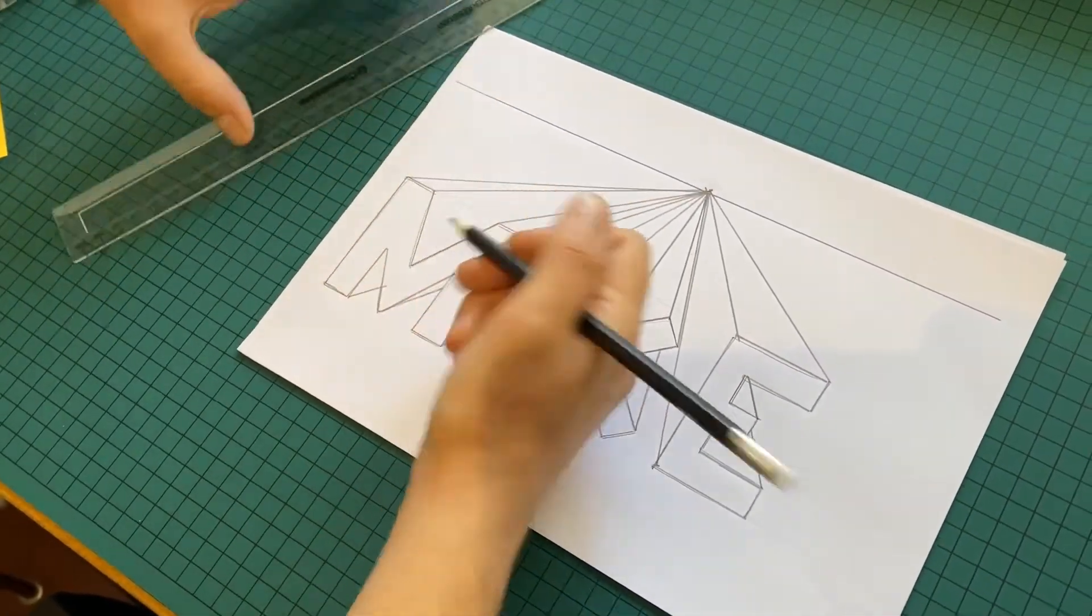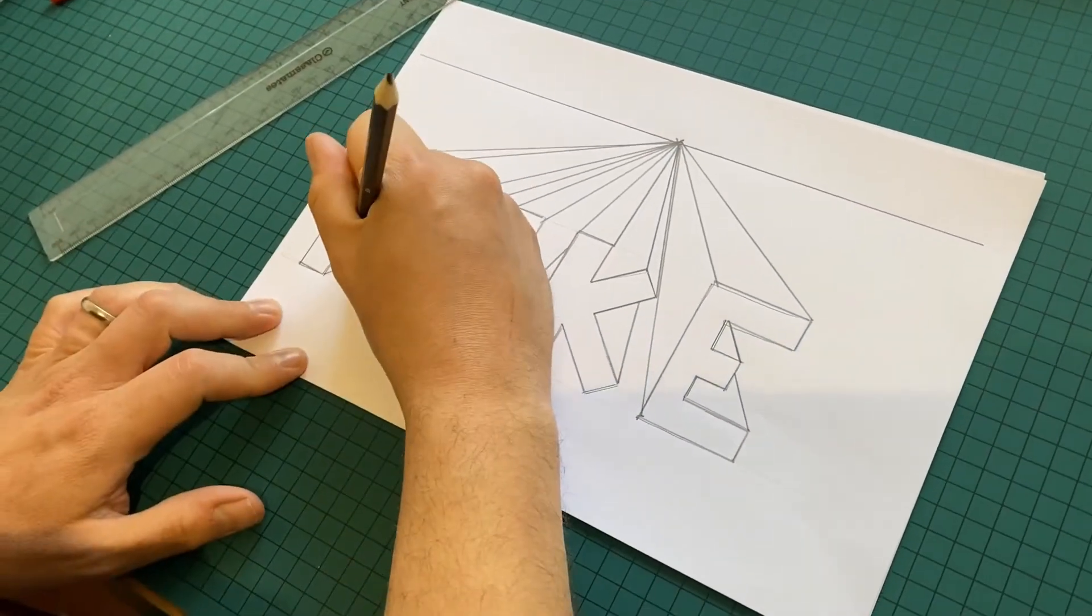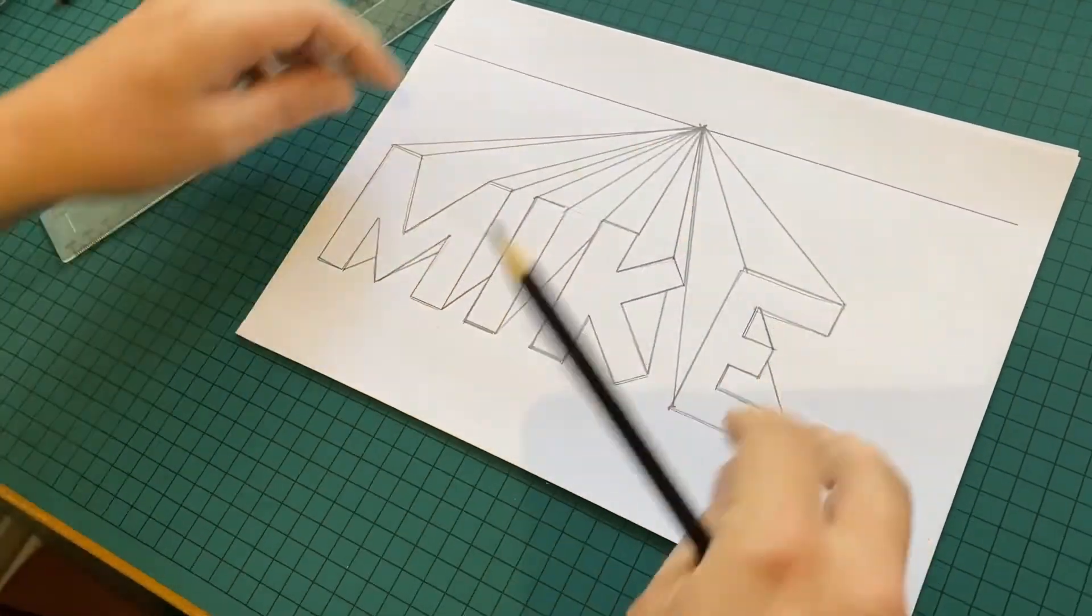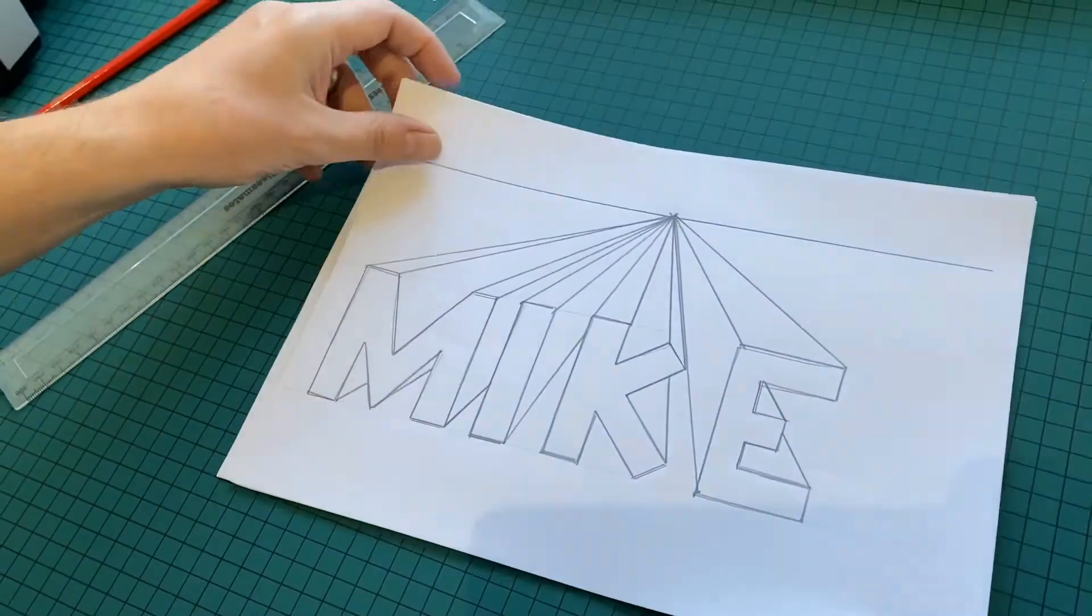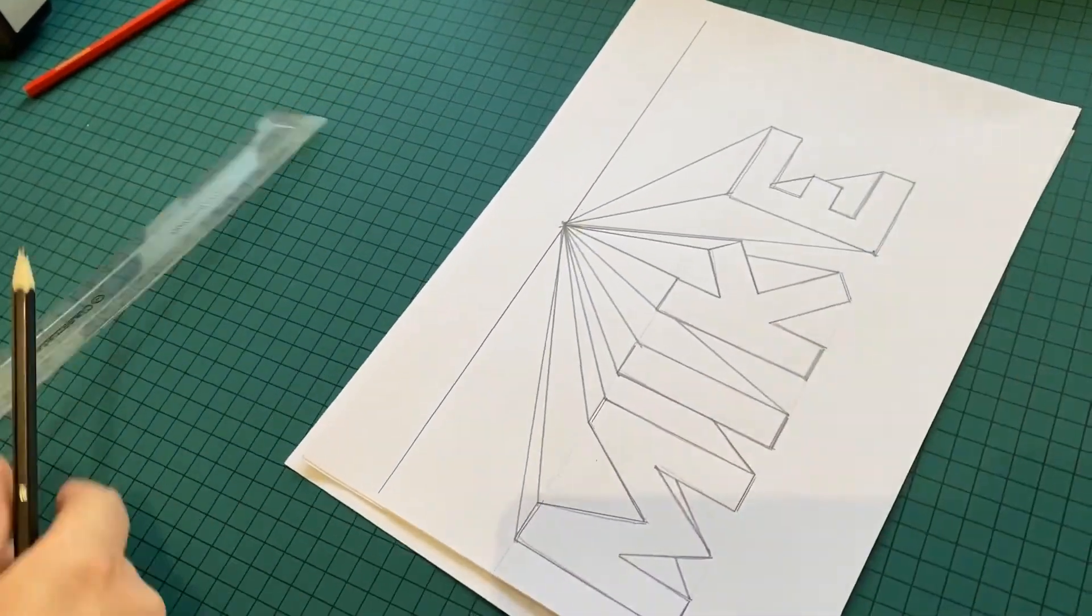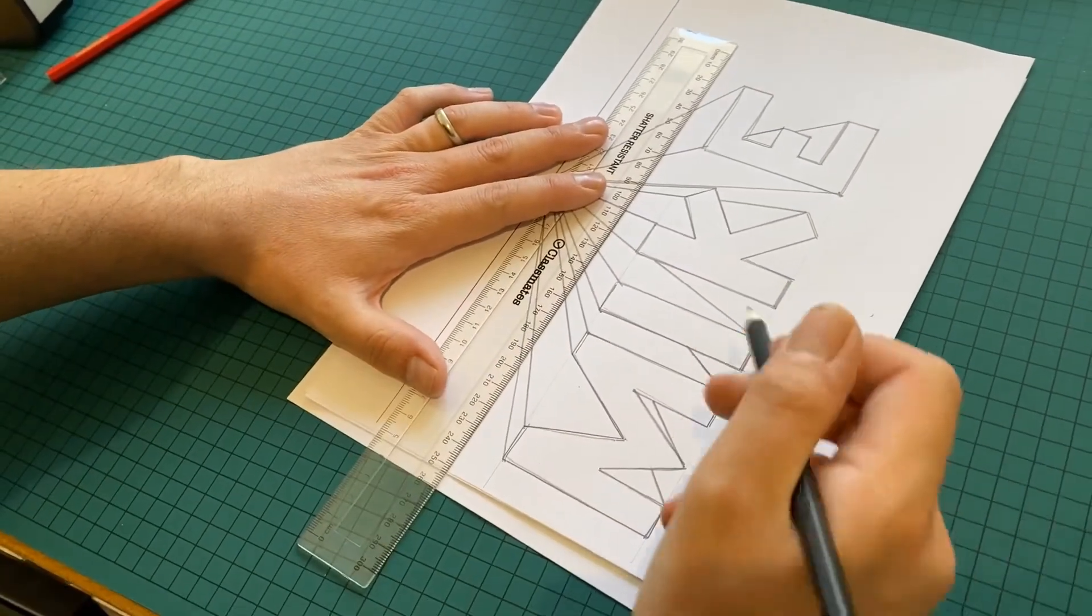Once I've done this, you can see I'm just rubbing out a little bit of correction there. Once you've done this, now like I did before, I'm going to start drawing my parallel lines. So diagonal lines first, then you do your parallel lines.